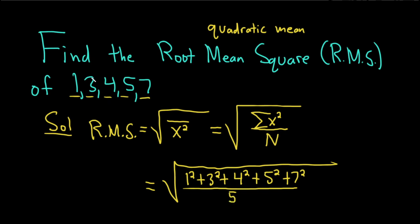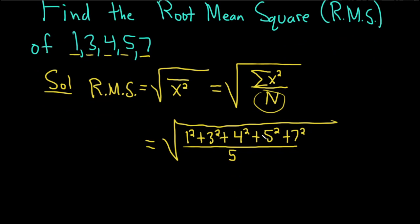So again, you square all of the numbers, add them up, divide by the total number of data, and then take the square root. I believe this is like 4 and a half.